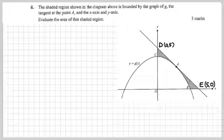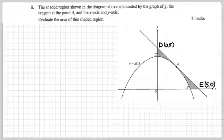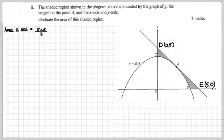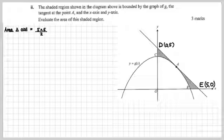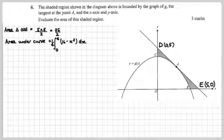That's going to give us D at (0, 5) and E at (5, 0) — those intercepts we got from knowing the equation of the tangent line going through A. The area of triangle ODE is 5 times 5 over 2, which is 25 over 2. Half base times height.